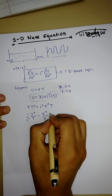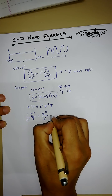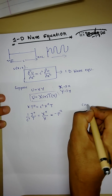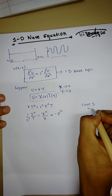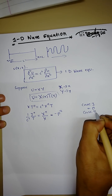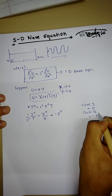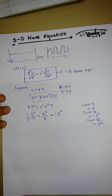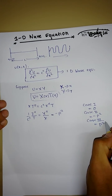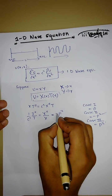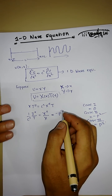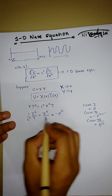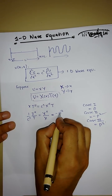We assume the separation constant equals −p². There are actually three cases: case one sets the constant to zero, case two sets it to −p², and case three sets it to +p². We mostly use case two, −p², so we equate both sides to −p².